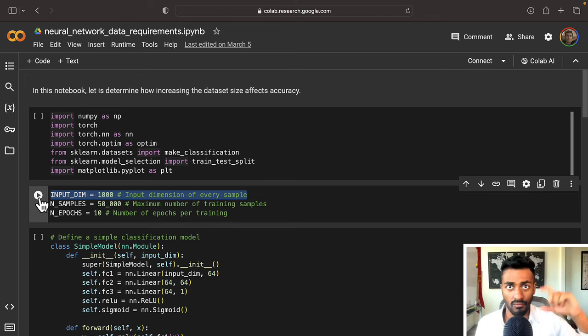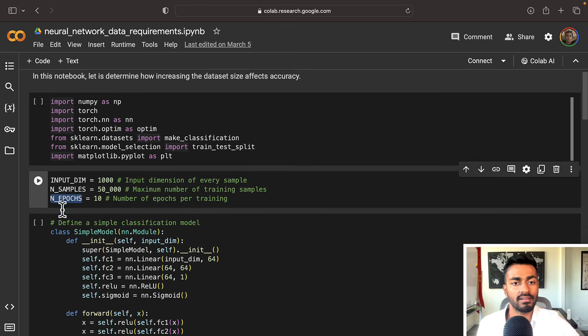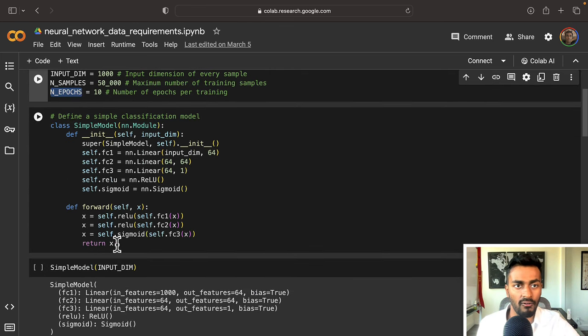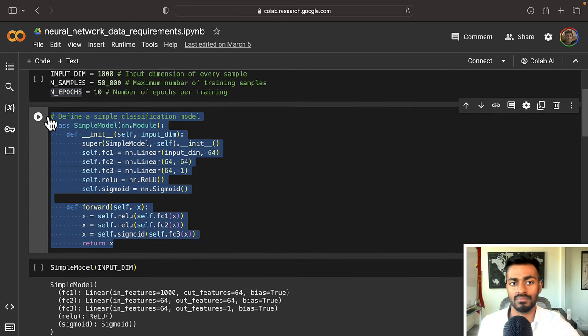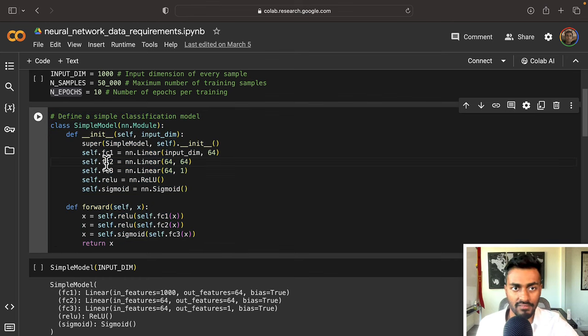Now input dim is going to be the number of dimensions for every single example. In this case, it's going to be a 1,000 dimensional input. Number of samples is 50,000. And the number of epochs during training for every single dataset size is going to be 10. Next, we define our simple model which is going to be a very simple feed-forward neural network with three feed-forward layers along with a ReLU activation and a sigmoid as well.